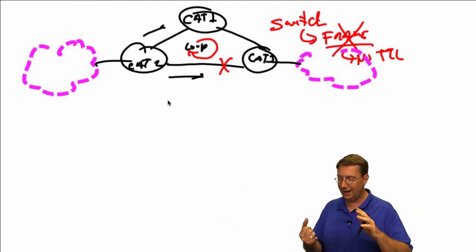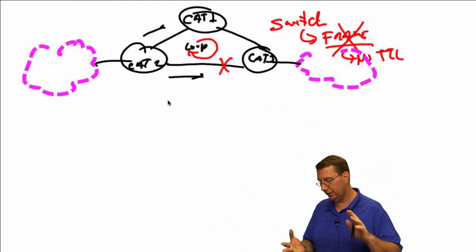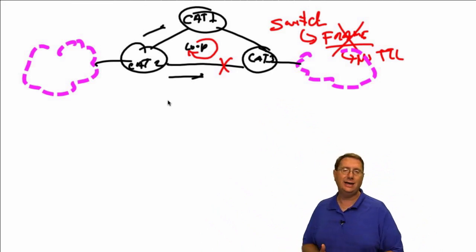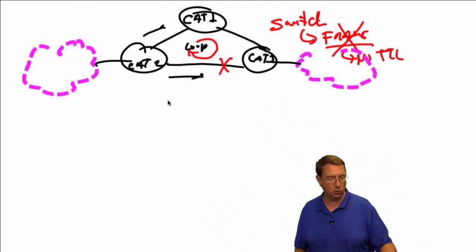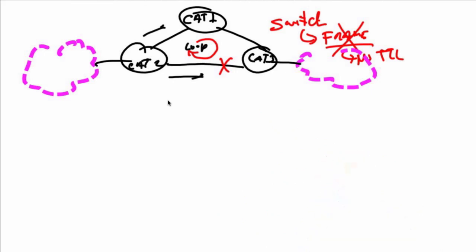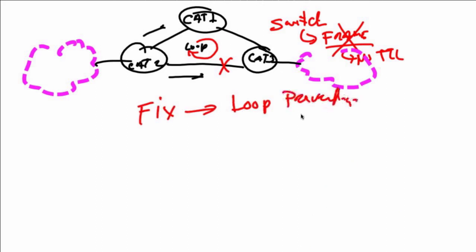But like I said, it introduced a problem. The issue is the idea that we had MAC address population problems and broadcast storms and other things that quite literally brought our infrastructure down to its knees. So what ended up happening is we needed a fix — some type of loop prevention mechanism. That loop prevention mechanism came to us in what's referred to as Spanning Tree Protocol.